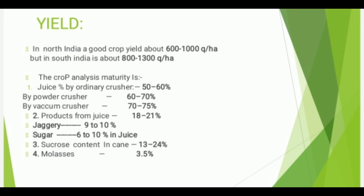Yield: In North India, a good crop yields about 600 to 1000 quintals per hectare; in South India, about 800 to 1300 quintals per hectare. Juice extraction — by ordinary crusher: 50 to 60%; by power crusher: 60 to 70%; by vacuum crusher: 70 to 75%. Products from juice: Jaggery — 18 to 21%; Sugar — 9 to 10%; Sucrose content in juice — 13 to 24%; Molasses — 3.5%.